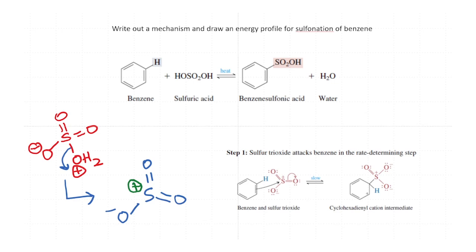In sulfuric acid, this is a protonated form of sulfuric acid where a proton has been moved, and you can imagine that once this oxygen gets protonated, the loss of water can occur and it produces the SO₃ species, which is now well set up to do a reaction with the benzene ring.